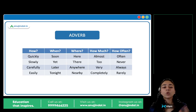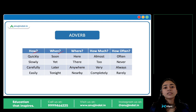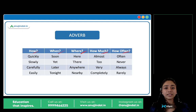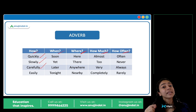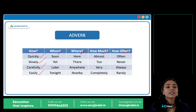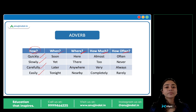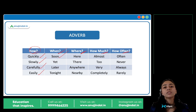Next is adverb. Adverb is basically any word which answers the question how, when, where, how much, or how often. In questions ka jo answer deta hai, woh word hai humara adverb. Quickly, slowly — 'He walked slowly.' How? Slowly. Carefully — 'Listen to me carefully.' How? Carefully. Easily — 'I could do this easily.' How? Easily. Toh how ka answer de raha hai. When: soon — 'I'll be visiting soon.' Yet — 'I have not yet decided.'